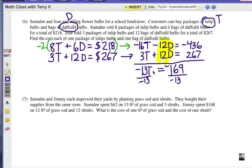We get negative 13T equals negative 169, and we divide each side by the negative 13 and it should give us T equals 13. That's 13 bags of tulip bulbs. What's our next step? That's right.